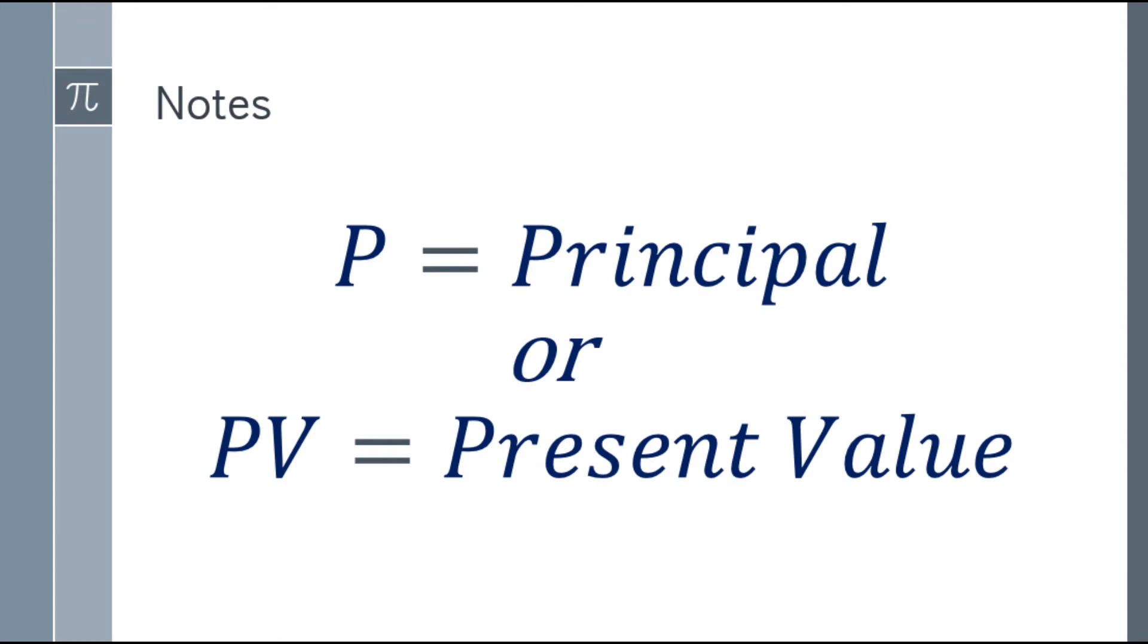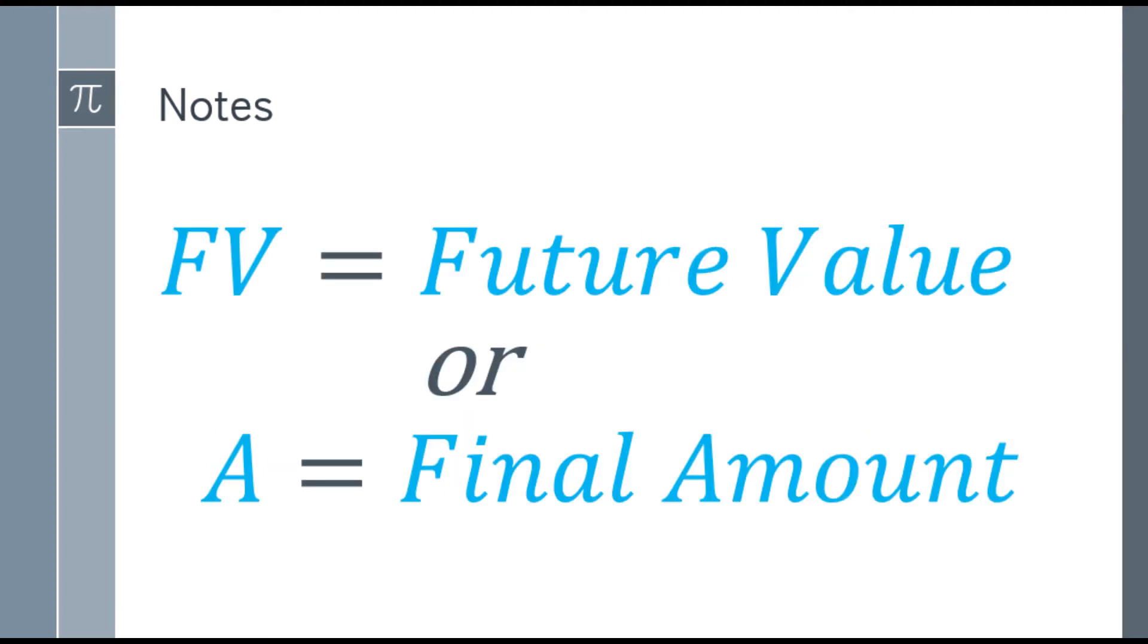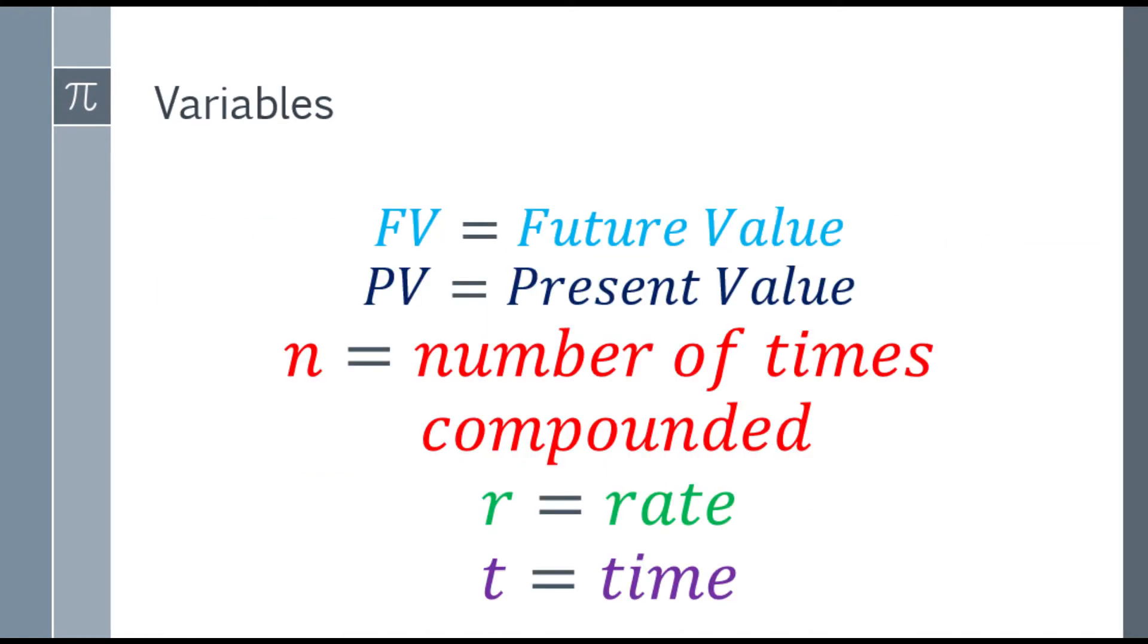Notes first. You'll notice in some textbooks, P is for principal. PV is present value. They have the same value. It just differs in the textbook you're using or the professor teaching you. Same with FV for future value or A for final amount. In this video, we'll use PV for present value and FV for future value. Here are the variables we'll use: FV for future value, PV for present value, N for the number of times compounded, R for the rate, and T for time.